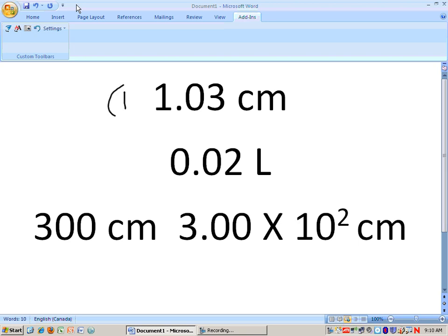Rule number one, zeros between non-zeros are significant. Our example is 1.03. There are three significant figures in this number: 1, 0, and 3.